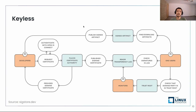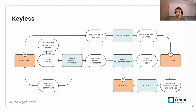Now let's see the end user story. We are an end user and we want to verify the signature. First we find and download the artifact from the registry, then we query the Rekor transparency log. We check the signature, the keys, the timestamp, and if we trust it, we check that the signing party is inside the Sigstore trust root — and with that information, we can successfully verify the signature.